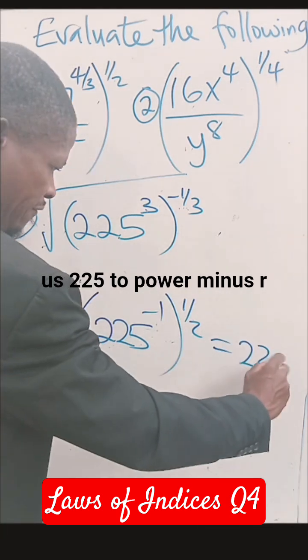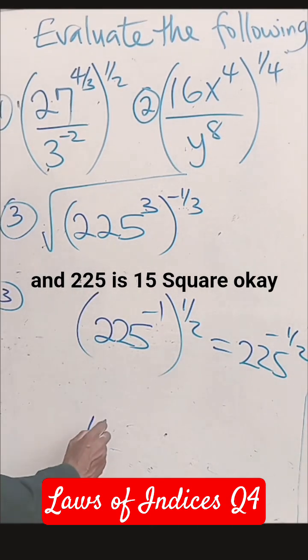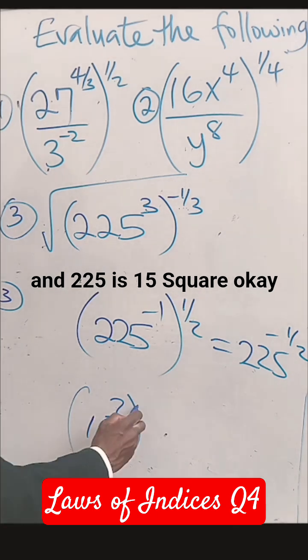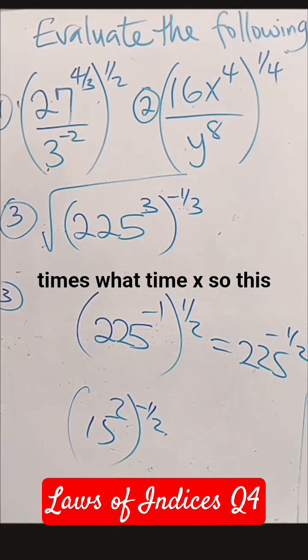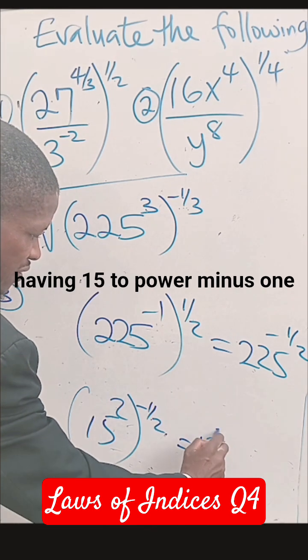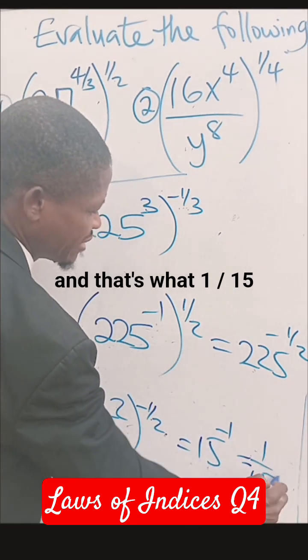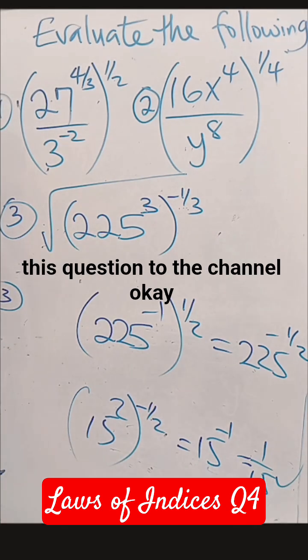And that's giving us 2 to 5 to power minus half. And 2 to 5 is 15 square times this. So this one and this one will give us minus 1. So I have 15 to power minus 1, and that's 1 over 15. And that's that.